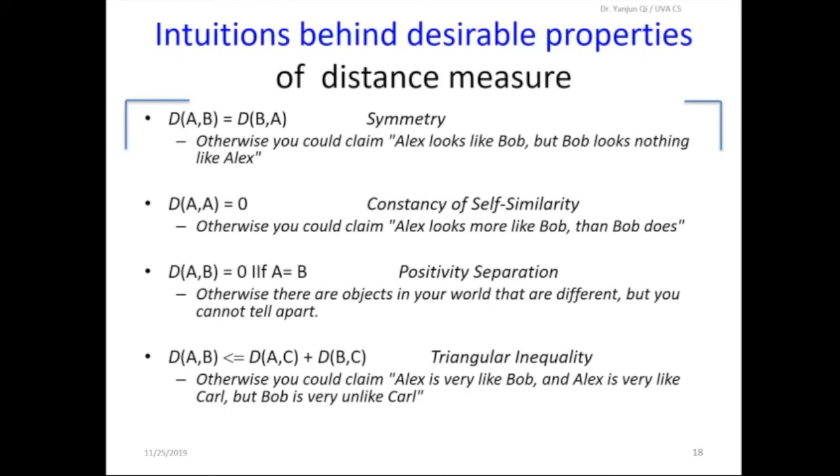So symmetry means the distance between A and B is the same distance as B and A. Because you want to avoid, you can claim Alex is like Bob, but Bob looks nothing like Alex. So we want distance measures to have symmetry properties.